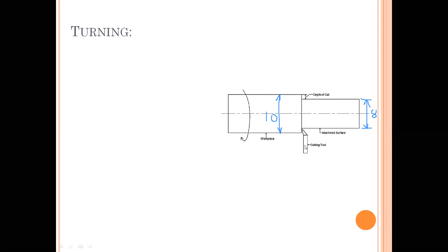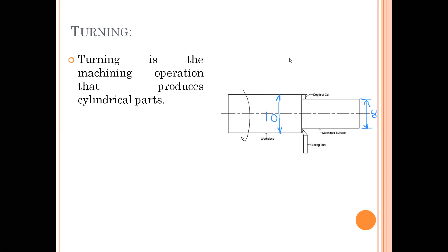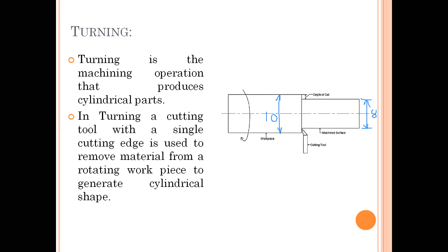This is the base metal and this is the cutting tool. The workpiece is going to be rotating, and we are moving the cutting tool in the direction parallel to the axis of rotation of the workpiece. By moving the cutting tool against the rotating workpiece, we are going to remove the material — this process is called a turning operation. Turning is the machining operation that produces cylindrical parts. In turning, a cutting tool with a single cutting edge is used to remove material from a rotating workpiece to generate a cylindrical shape.